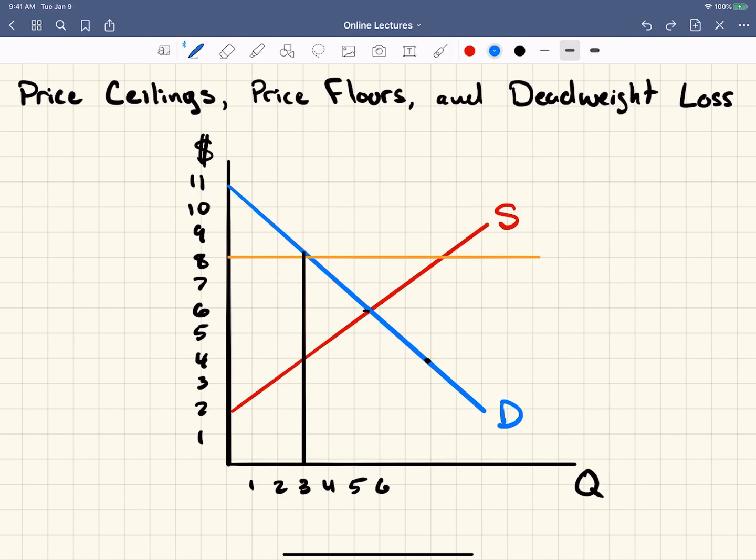And so the whole area of this triangle represents consumer surplus. So even though the price is jacked up above market equilibrium, there are even still people up here that would have paid more than even the price floor is set at. But look what happens to consumer surplus. I'm sorry, producer surplus.